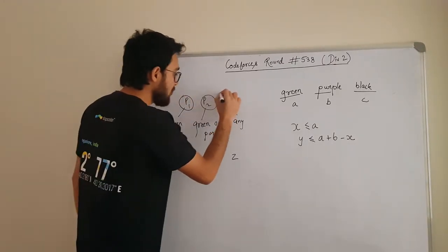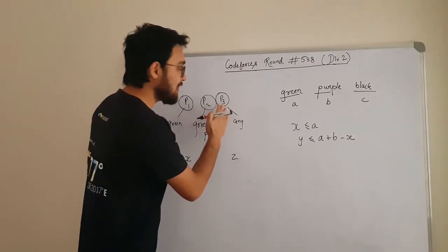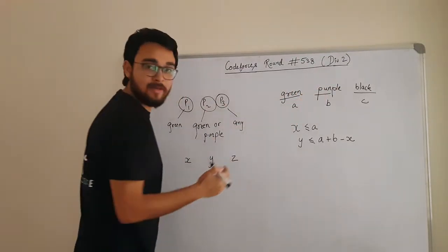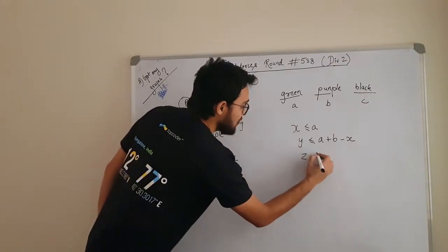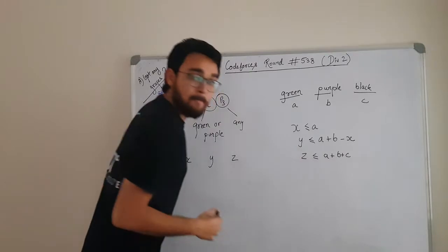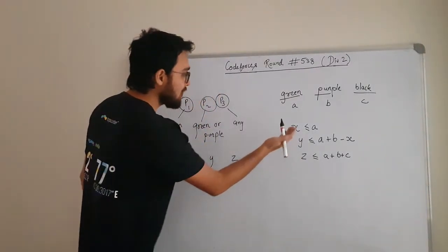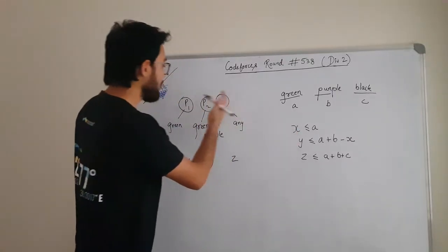Now P3. To satisfy the need of P3, he can take grapes from any of these grapes. So Z needs to be less than or equal to A plus B plus C. But we need to subtract X and Y. Why? Because we have already given X grapes to P1 and Y grapes to P2.